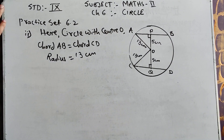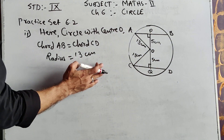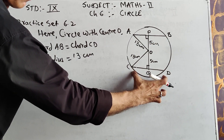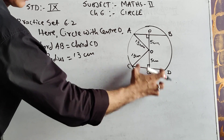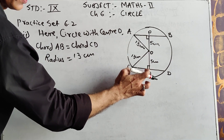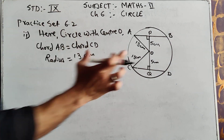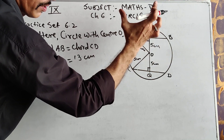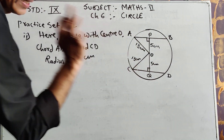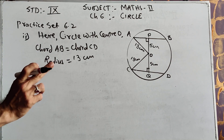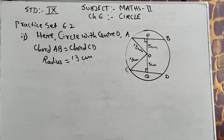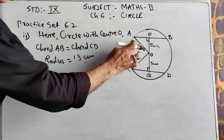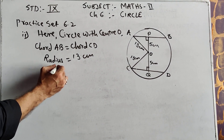Now come to sum number 2 of Practice Set 6.2. The diagram is in front of you: circle with center O, chord AB equals chord CD — both chords are equal. The distance of the chord from the center of the circle is 5, and you want the length of the chord. If you find one chord length, automatically you will get the length of the second one as well because the chords are equal. So here we will directly use the Pythagoras theorem.